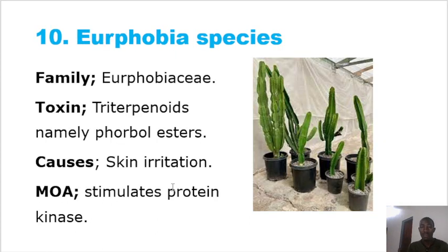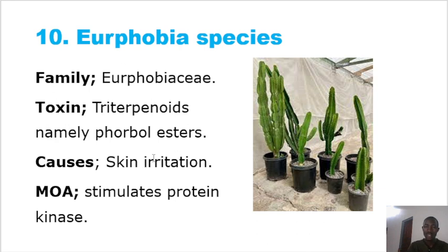Euphorbia has many species and is in the family Euphorbiaceae. The toxins include phorbolesters, which are triterpenoids. Euphorbia causes skin irritation — if you break the plant and its latex contacts your skin, there is irritation. The mode of action is that it stimulates protein kinase C.